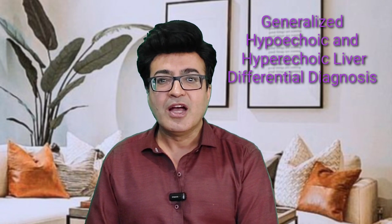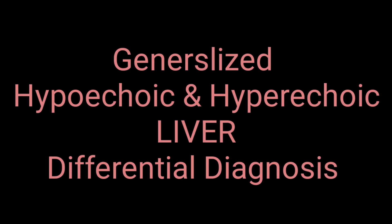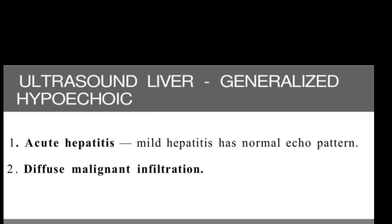Let's start looking at the differentials of the generalized diffuse hypoechoic and hyperechoic liver. Differential diagnoses for the generalized hypoechoic liver on ultrasound include acute hepatitis. In acute hepatitis, the liver will either be mildly enlarged or appear normal, but the parenchyma will show a hypoechoic pattern with reduced echogenicity. Due to this reduced echogenicity, the walls of the portal veins appear echogenic, giving rise to a specific sign called the starry sky sign.